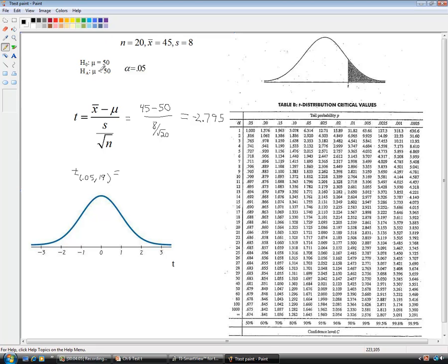We want it on the left-hand side since we're looking for less than. So that critical value is going to be 0.05 here, 19 down, 1.729, which we're calling negative 1.729. All right, so that value is going to fall right around here, probably.